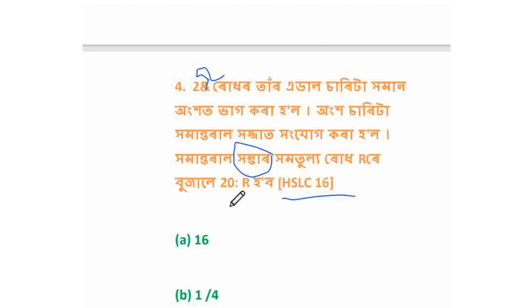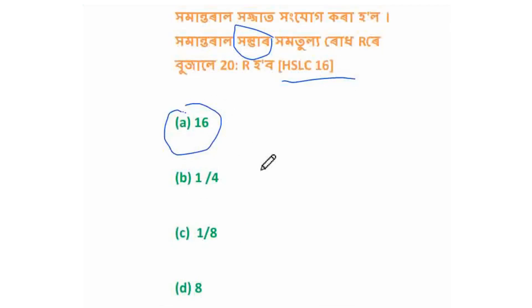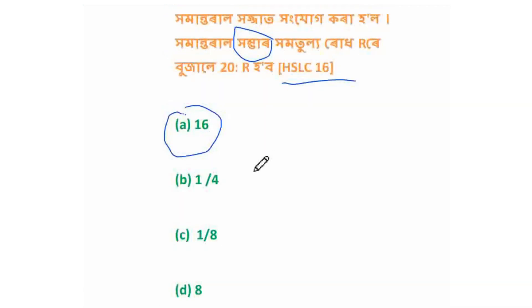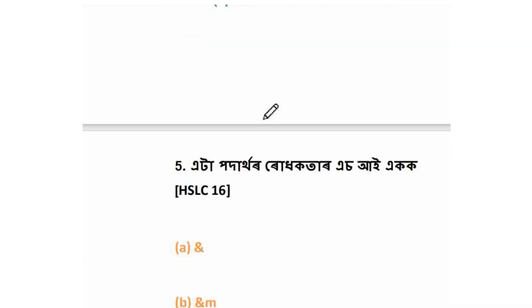Option C is 1/8, option D is 8. Our correct option is A, and R is open. In this case, the rule is 1, so the rule method is 1.